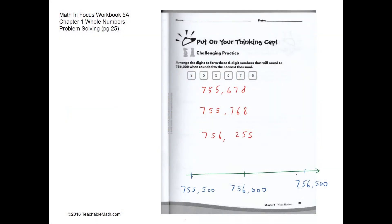Challenging practice. Arrange the digits to form three six-digit numbers that will round to 756,000 when rounded to the nearest thousand. So on a number line, 755,500 is the smallest number and 756,499 is the greatest number that will round to 756,000.